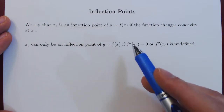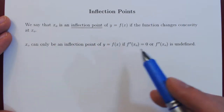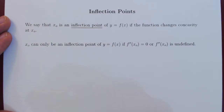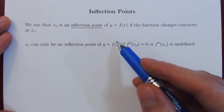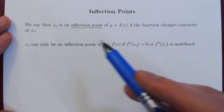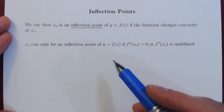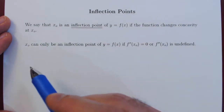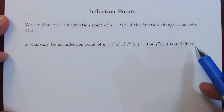Inflection points are crucial points in sketching a graph of any given function, because only at those points can the curve change its concavity from concave up to concave down, or concave down to concave up. And let's see why this is fairly obvious.